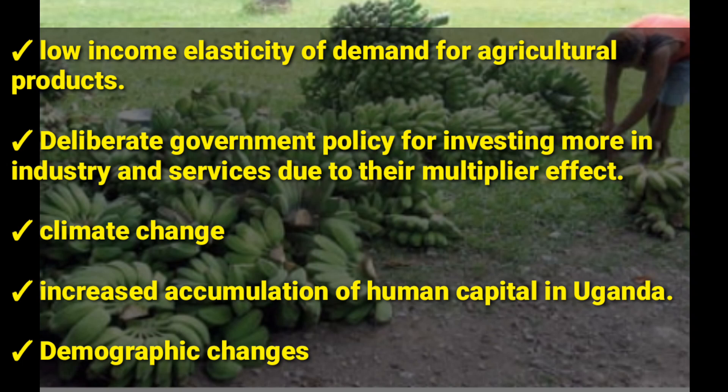Another reason is demographic changes. Uganda's young population is demanding more services, particularly education, health, and entertainment. They want more off-farm services than agricultural products. Even though we need to eat, people care less about it. So demographic changes have also led to the reduced contribution of agriculture to GDP.